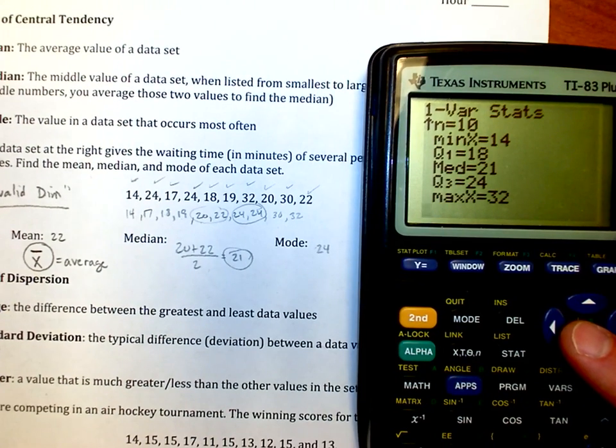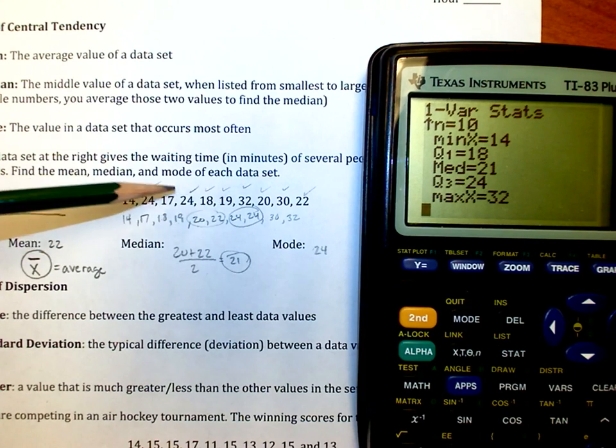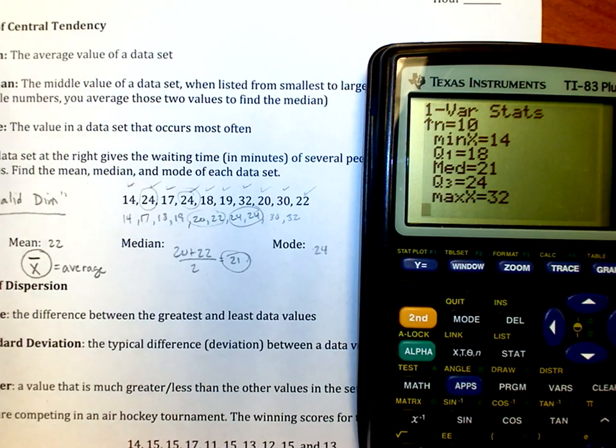The only thing it doesn't do here is the mode. But you can go through and figure out the 24 is the one that occurs twice, the one that occurs most often. So that's how to do basic statistics on mean, median, mode on this TI-84 calculator using the stat menu.